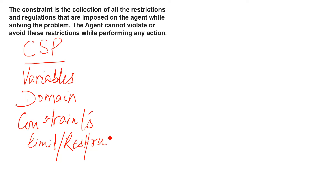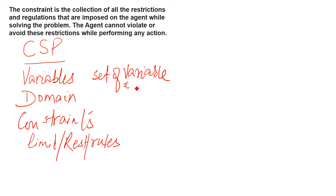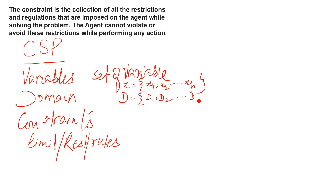We have a set of variables. I will write this as X, where X is the set: x1, x2, and so on up to xn. These are all the variables. Then we talk about the domain — the set of domains: d1, d2, d3, and so on up to dn. What is the meaning of domain? We will assign values to the variables — that is called the domain. For example, if x equals 2, that value belongs to the domain.